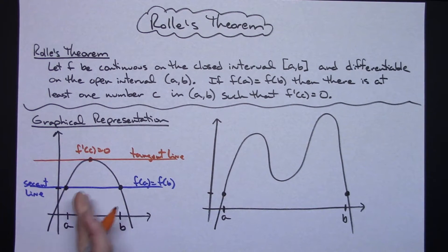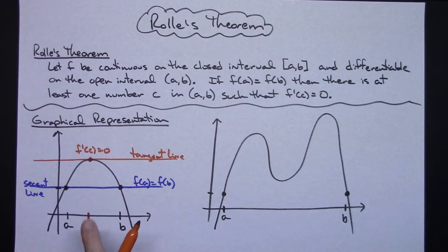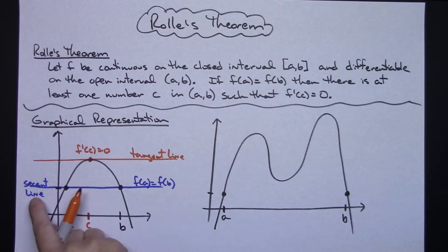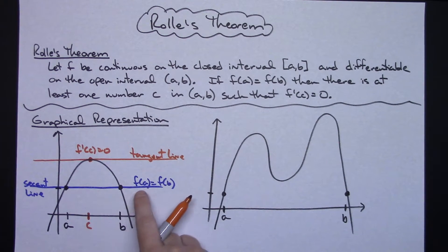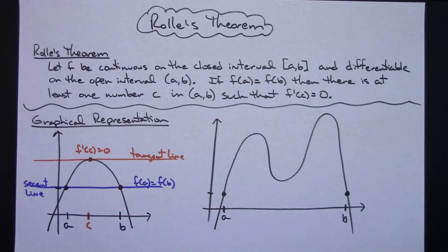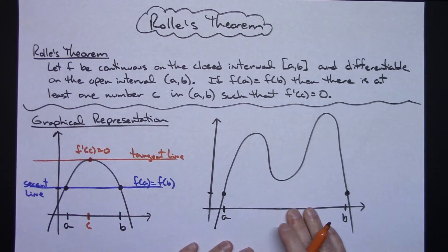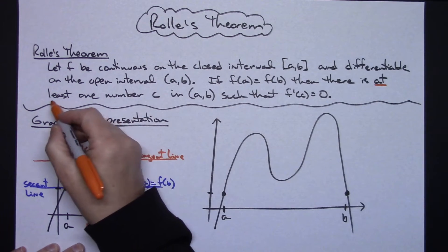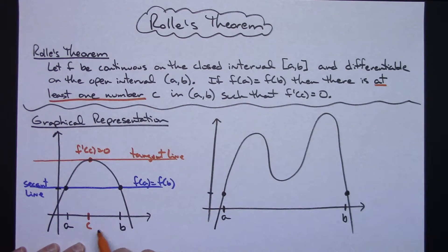You can find that value of C. In this case, I've got just exactly one place where that tangent line is parallel to the secant line, with that secant line located at F of A equals F of B. Since the theorem says at least one value C, this one had one.